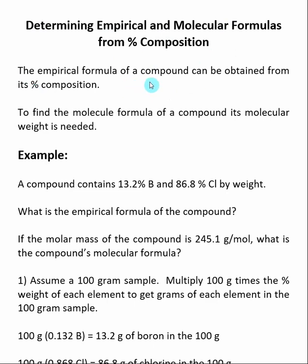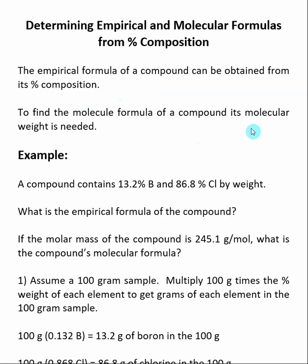The empirical formula of a compound can be obtained from its percent composition. In order to find the molecular formula of a compound, we will also need its molecular weight. This idea is important because if you have an unknown compound, there are experiments that you can run to determine its percent composition of elements and also its molecular weight. These two things together will allow us to determine the molecular formula of an unknown.